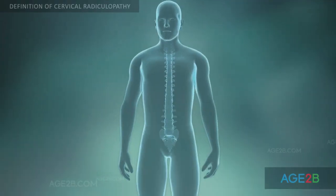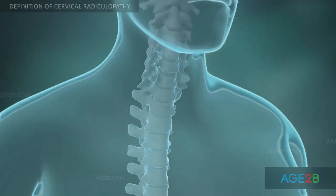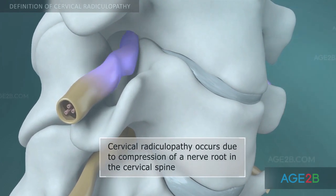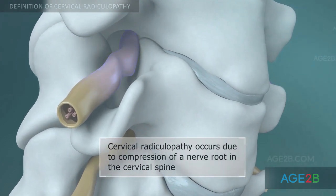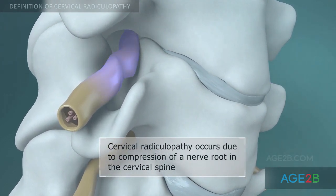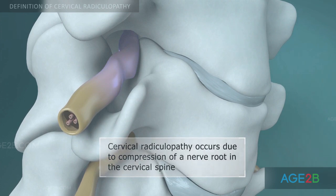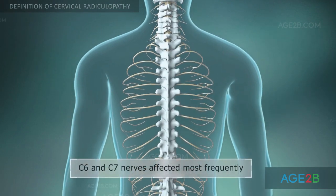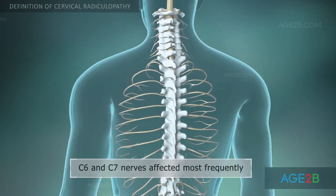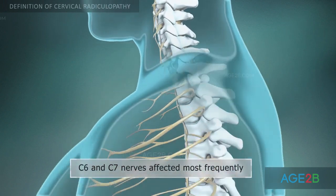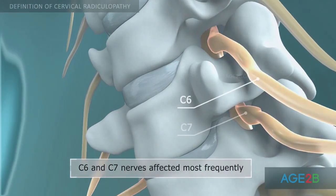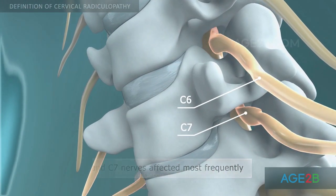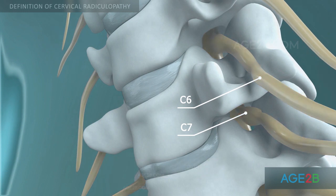Cervical radiculopathy is a condition that occurs when an intervertebral nerve root in the cervical region of the spine is compressed or pinched. Radiculopathy can affect all cervical nerve roots, but most often this pathological process involves C6 and C7 nerves.